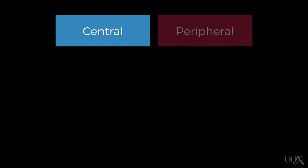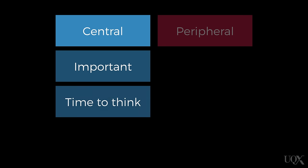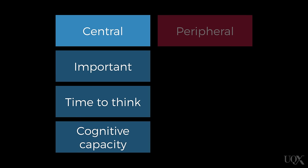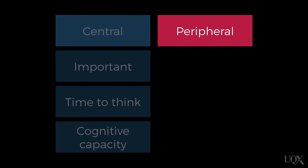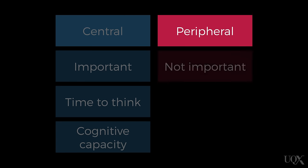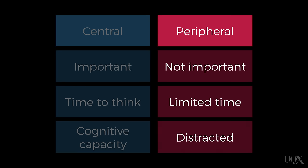So when do we use each route? We use the central route when an issue is important to us, when we have the time and the cognitive capacity to think about the issue. We tend to use the peripheral route when the issue is not so important to us, when there's limited time to think about the message, or when we're distracted.